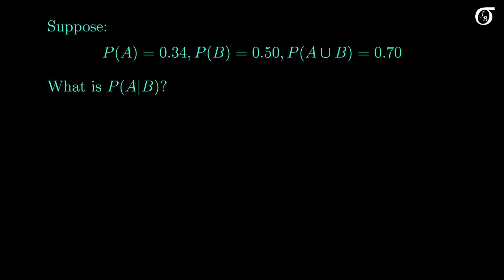Here's a simple example to start with. If the probability of A is 0.34, the probability of B is 0.5, and the probability of A union B is 0.7, what is the probability of A given that B has occurred? For a problem like this, we could draw a Venn diagram and work it out visually, but let's try using the conditional probability formula.